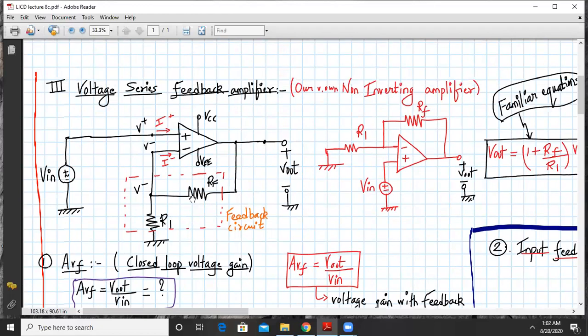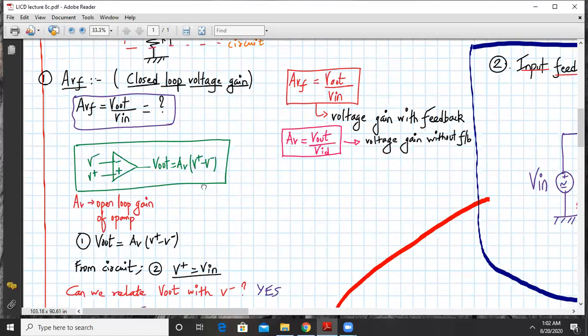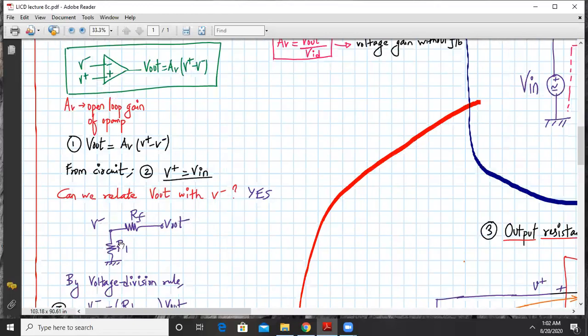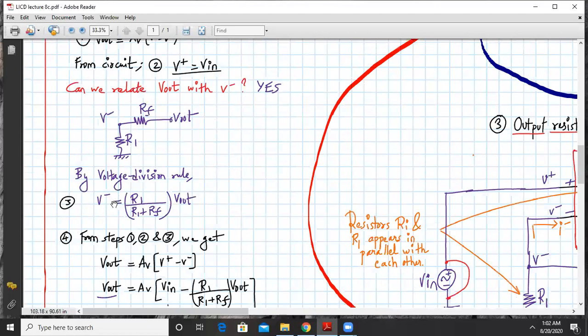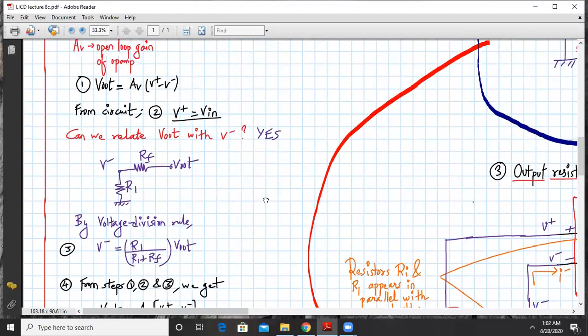If you trace back the path, it is a voltage divider network consisting of RF and R1. I have drawn this circuit over here; you can relate it now by voltage division rule. V minus equals R1 upon R1 plus RF times Vout. So from steps 1, 2 and 3,